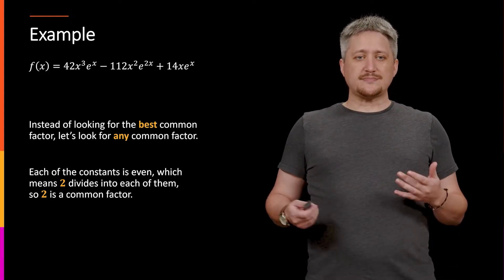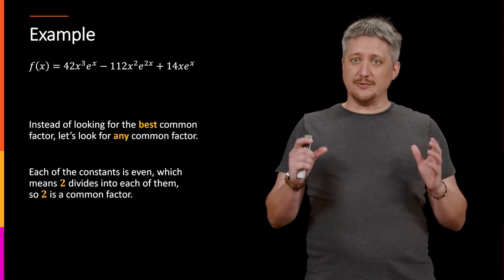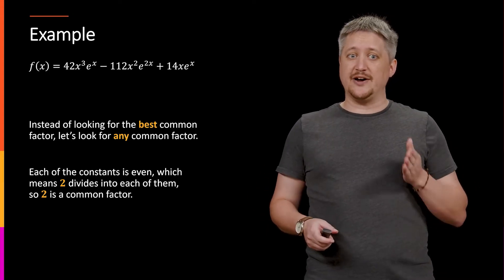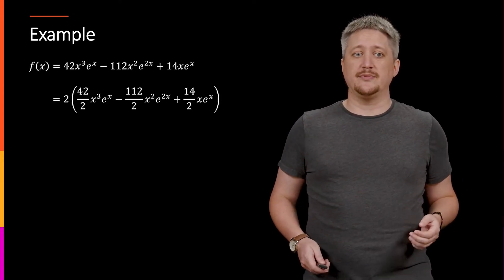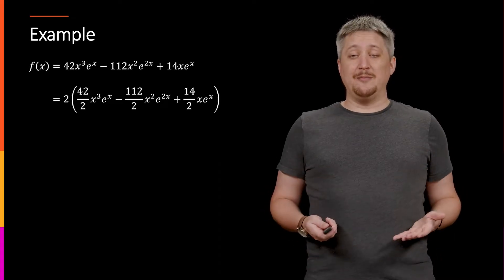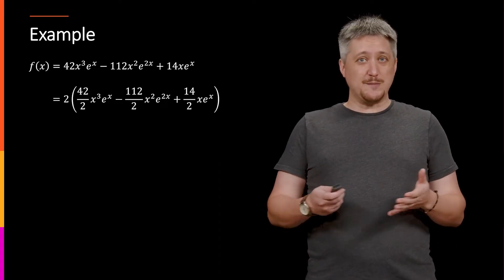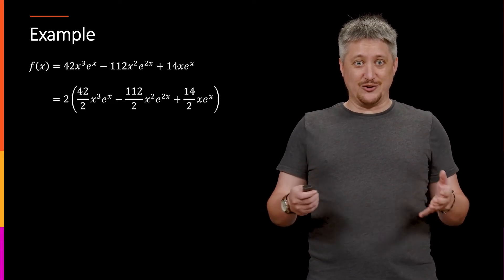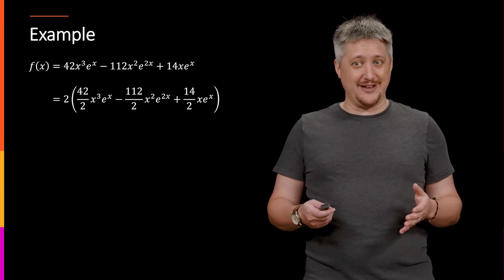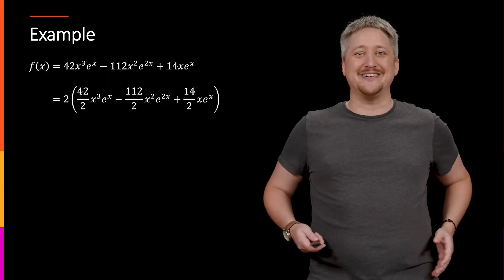So when I do that I'm going to write the 2 in the front, I'm going to have the parentheses to say that I'm factoring out of that, and then I'm going to divide 2 out of each of the terms. Now if it's a common factor each of those divisions should be nice and even, they should all simplify perfectly. If they didn't then that wasn't a common factor and I shouldn't have pulled it out.